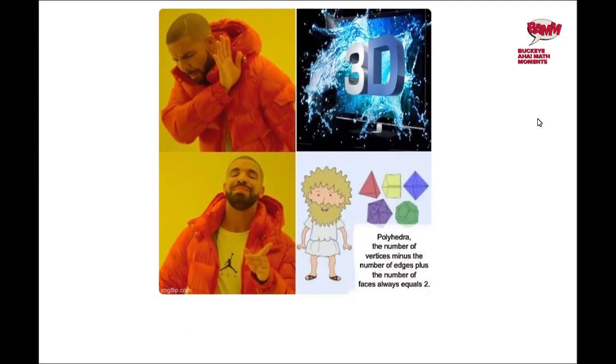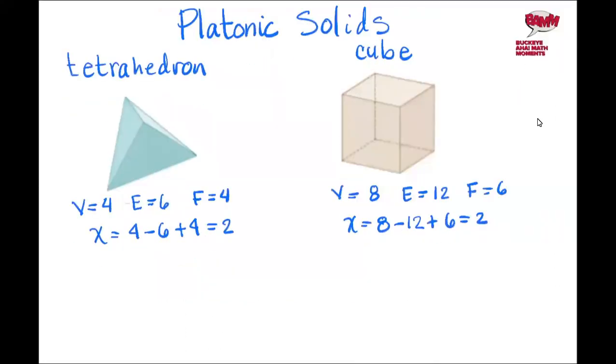First, let's run Euler's formula to our Platonic solids and see what we obtain. For the tetrahedron, here we see we have four vertices, six edges, and four faces, and when we run the Euler formula, we get two.